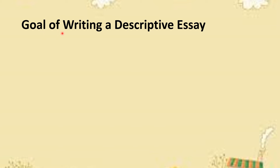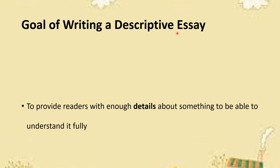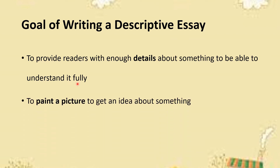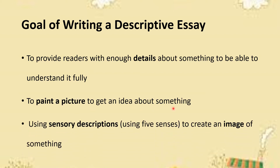Let me now tell you about the goal of writing a descriptive essay. The aim or goal is to provide the readers with enough details about something to be able to understand it fully. Another goal is to paint a picture — to get an idea about something — and you use sensory descriptions using the five senses to create an image of something for the reader.